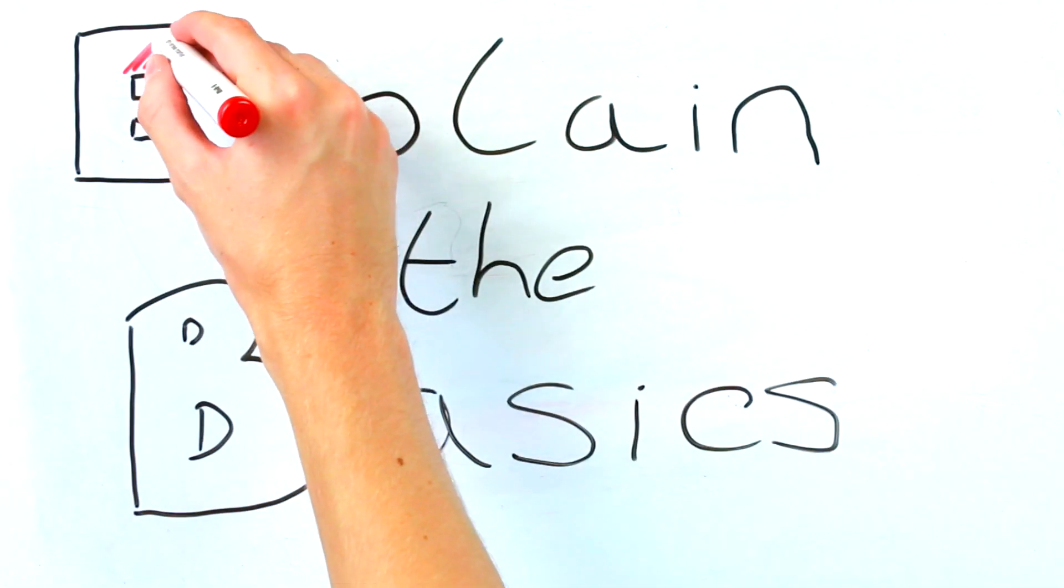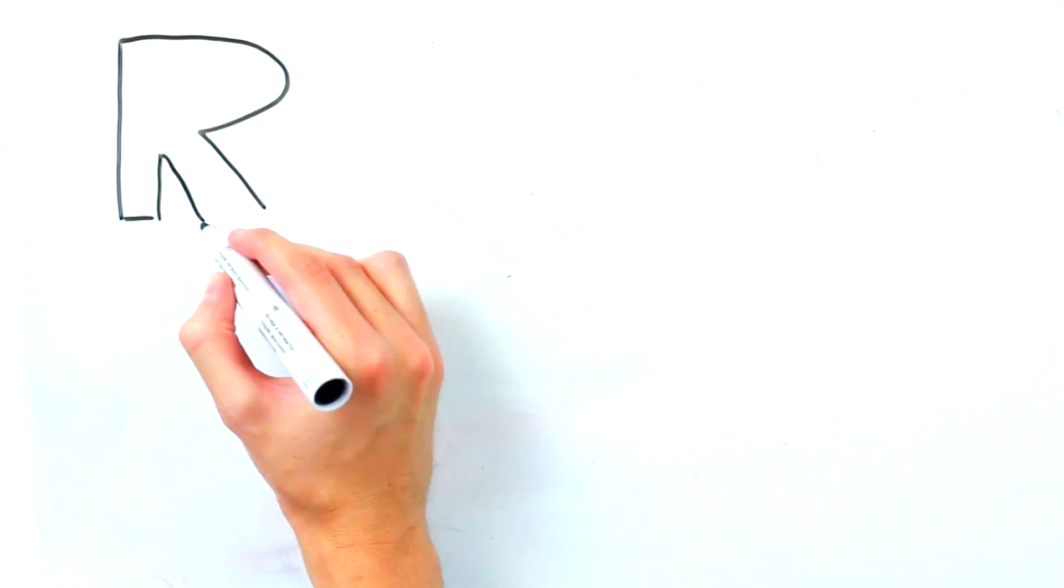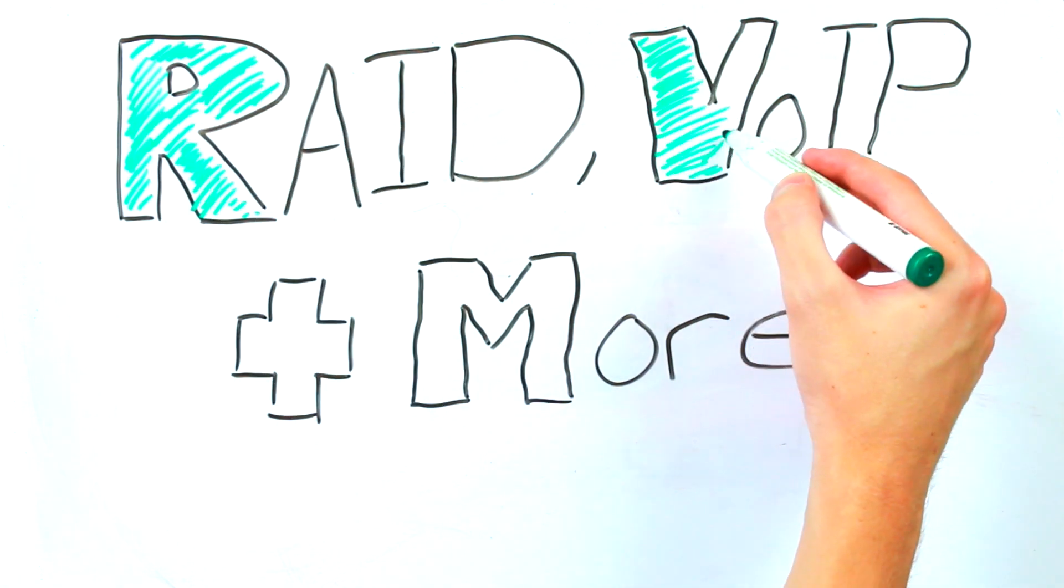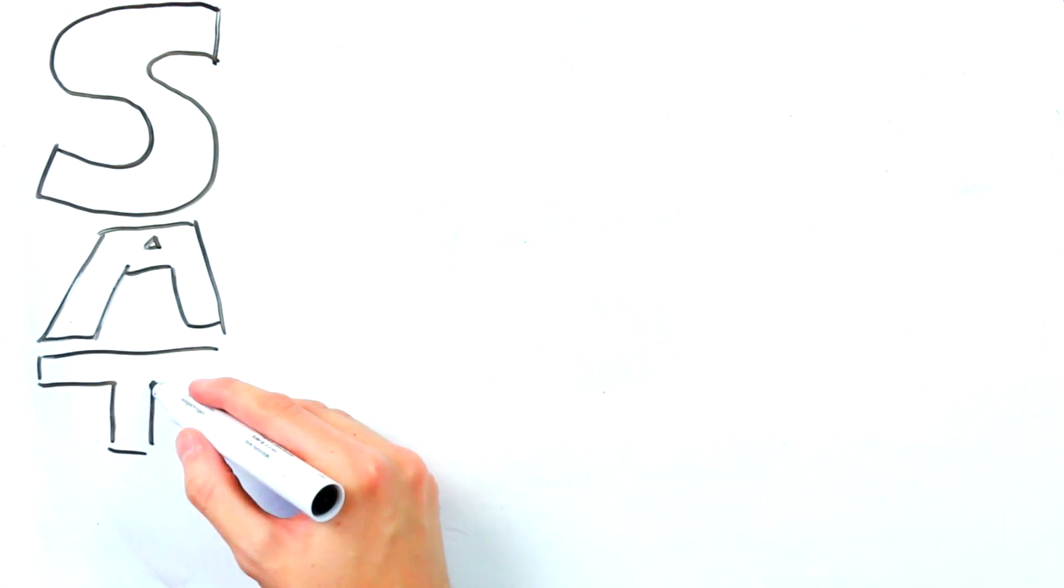Hello and welcome to episode 8 of our explain the basics series. This week's episode we cover a range of terminology that didn't really fit in any other episode. These include terms like RAID, VoIP and more. Simple enough really so let's get going with our first piece of terminology.